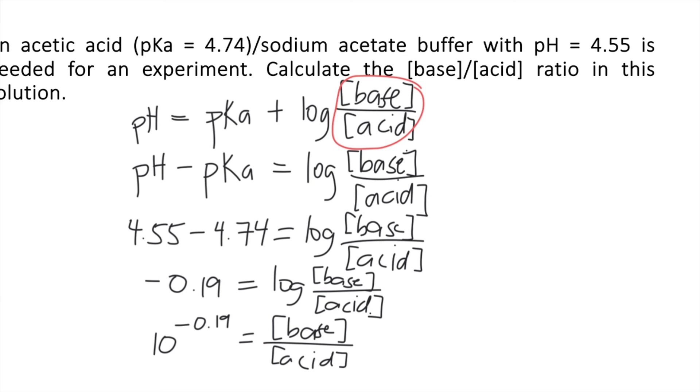If you solve that in your calculator, 10 raised to negative 0.19 equals approximately 0.646. Since it's a ratio between two concentrations, the units cancel out, so the ratio doesn't have a unit. The answer is 0.646.